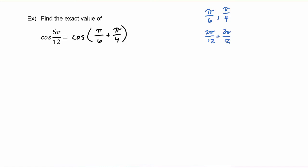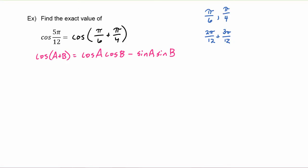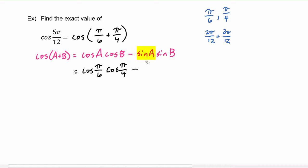We know that we're going to apply the identity we just learned: cosine of A plus B equals cosine A times cosine B minus sine of A times sine of B. Applying that here, we're going to take the cosine of the first angle — cosine of π/6 — times the cosine of the second angle — cosine of π/4 — minus the sine of the first angle — sine of π/6 — times the sine of the second angle — sine of π/4.